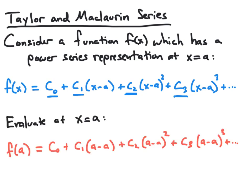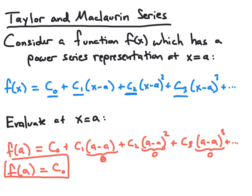In order to find the value of c₀, our first coefficient, we're going to evaluate our function and power series representation at x equal to a. When we substitute a in for x, all terms except the first involve x minus a to some power, which equals zero. So this equation simplifies to f of a equals c₀. Thus c₀ will always be the value of our function at the center of our power series representation, a.